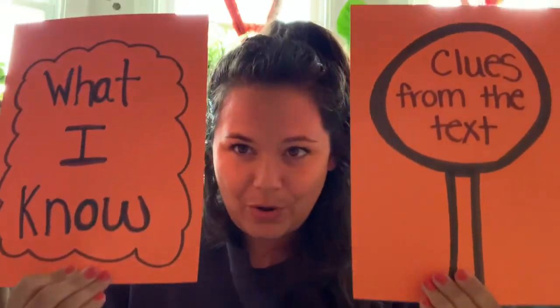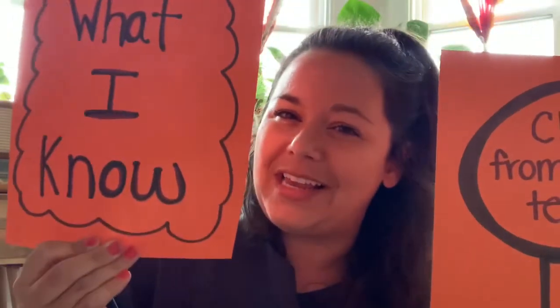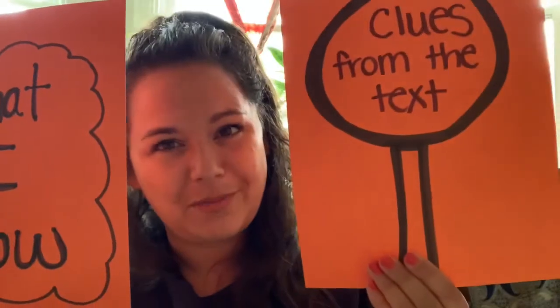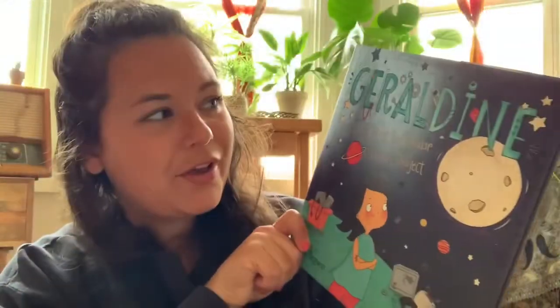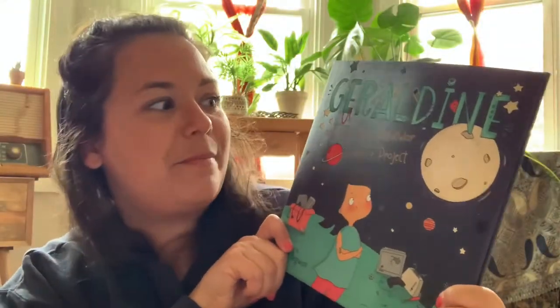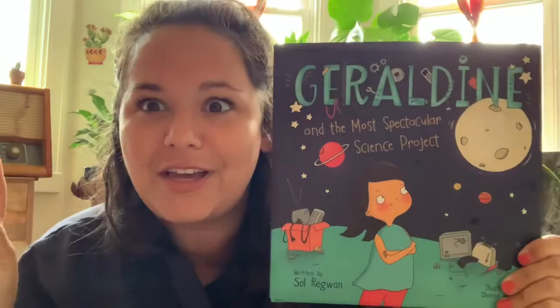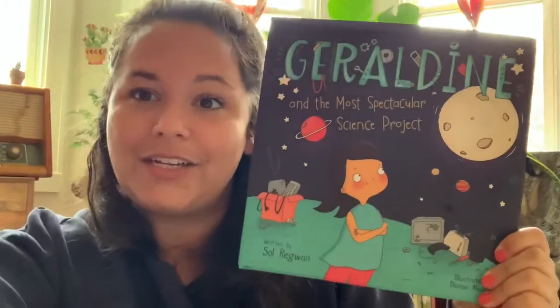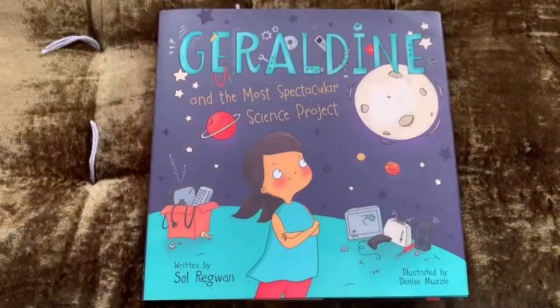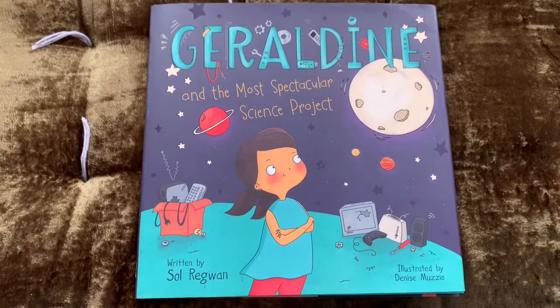So you're going to take both of these things — what I know already and what the book is showing me — and put them together to draw conclusions about how a character is feeling, or what a character is going to do, or what a character is thinking, or what's going to happen in the book. I just got this book in the mail called Geraldine and the Most Spectacular Science Project, and I thought we'd read this to practice drawing conclusions.